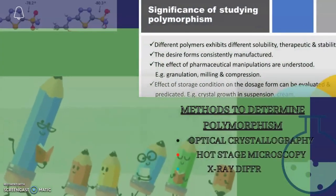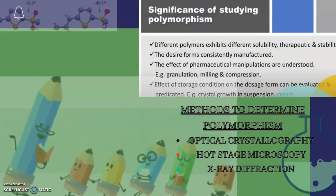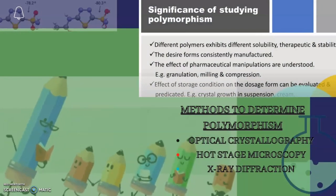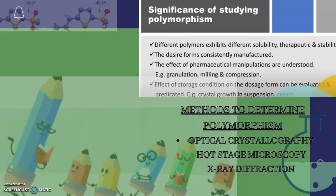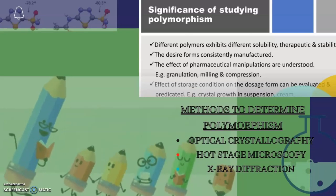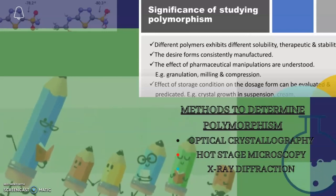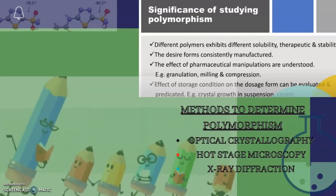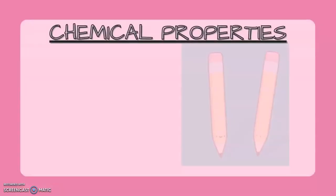We must know the significance of studying polymorphism. Different polymorphs exhibit different solubility, therapeutic efficiency and stability. The desired forms are consistently manufactured. The effect of pharmaceutical manipulations are understood, for example granulation, milling and compression, and the effect of storage conditions on the dosage form can be evaluated and predicted. Example: crystal growth in suspension and creams. Methods to determine polymorphism are optical crystallography, hot-stage microscopy and x-ray diffraction methods.